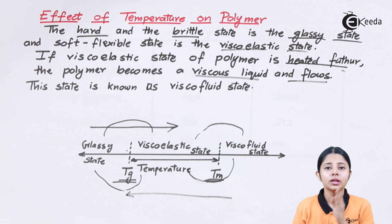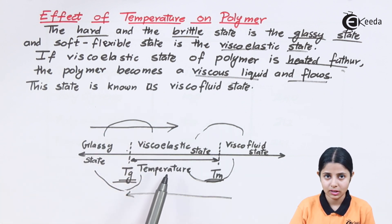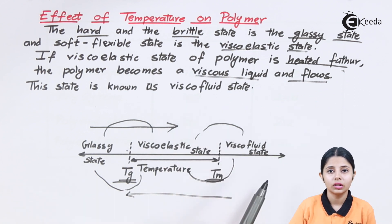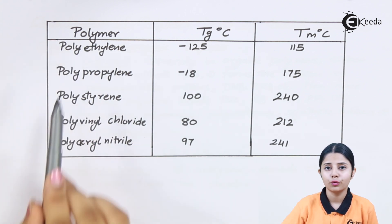In the same way, instead of melting points and boiling points we have Tg and Tm. Tg is the temperature where the glassy state will get converted into viscoelastic state, and Tm is the point where the viscoelastic state will get converted into viscofluid state. Now let us see the examples of different polymers.